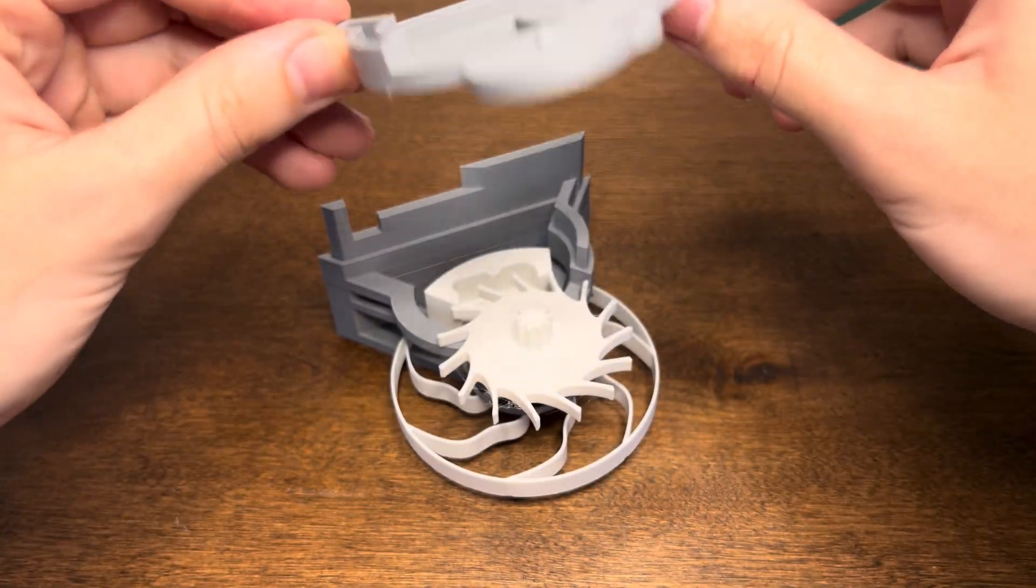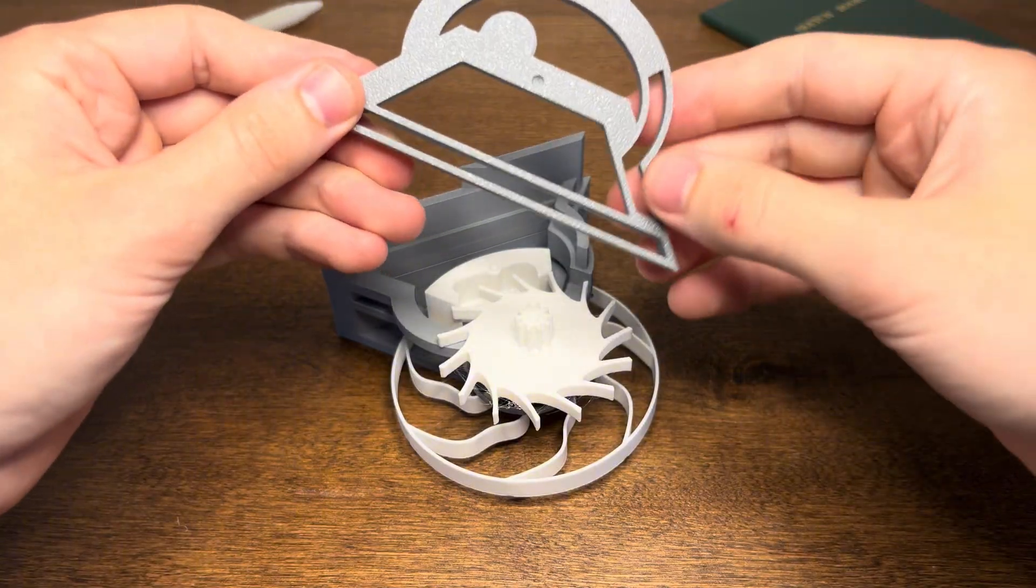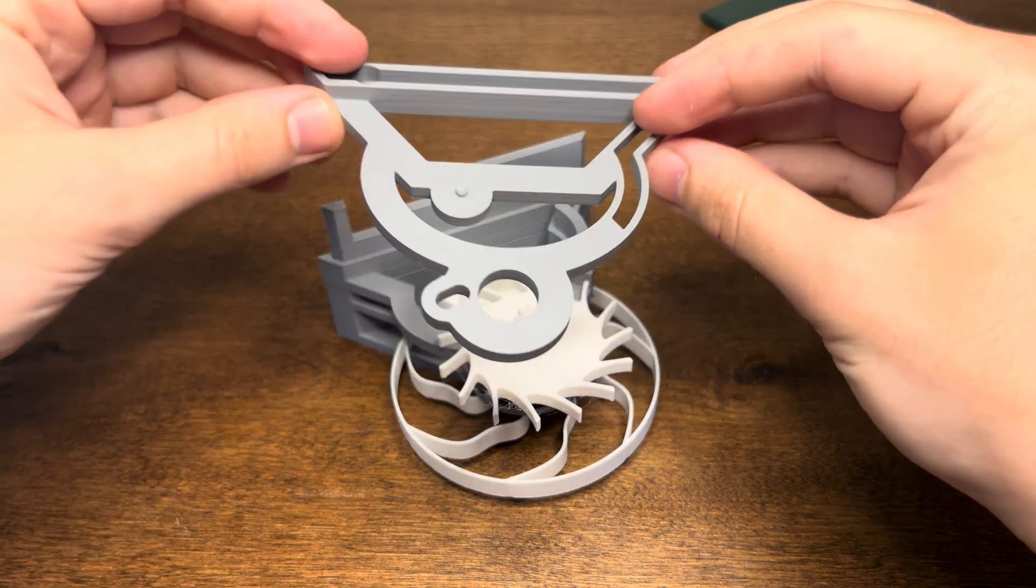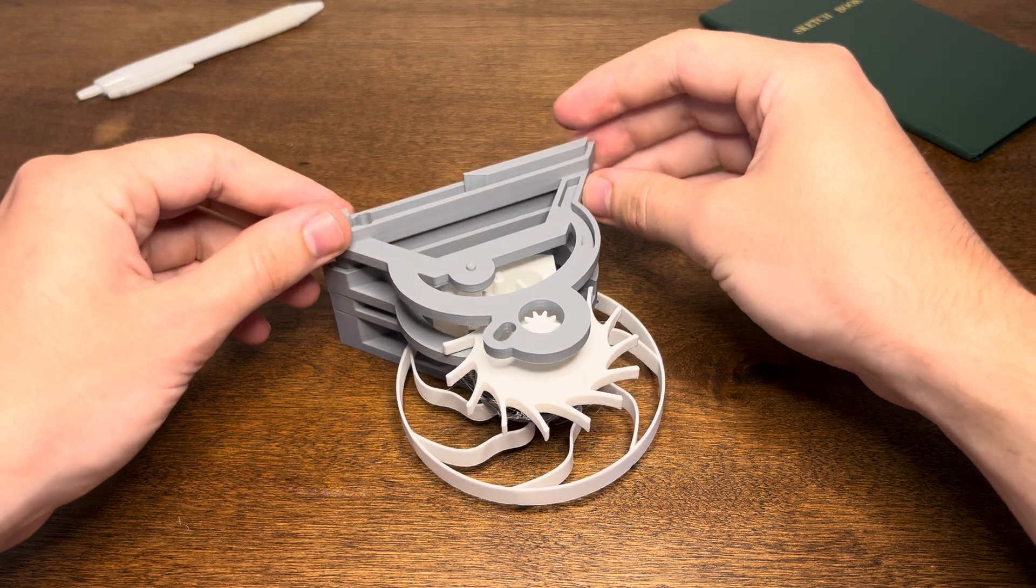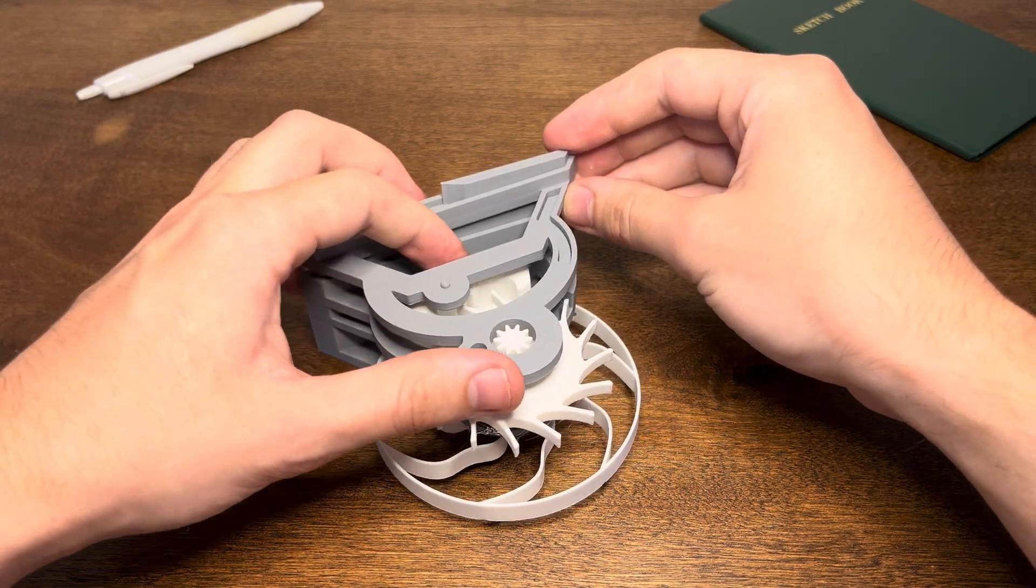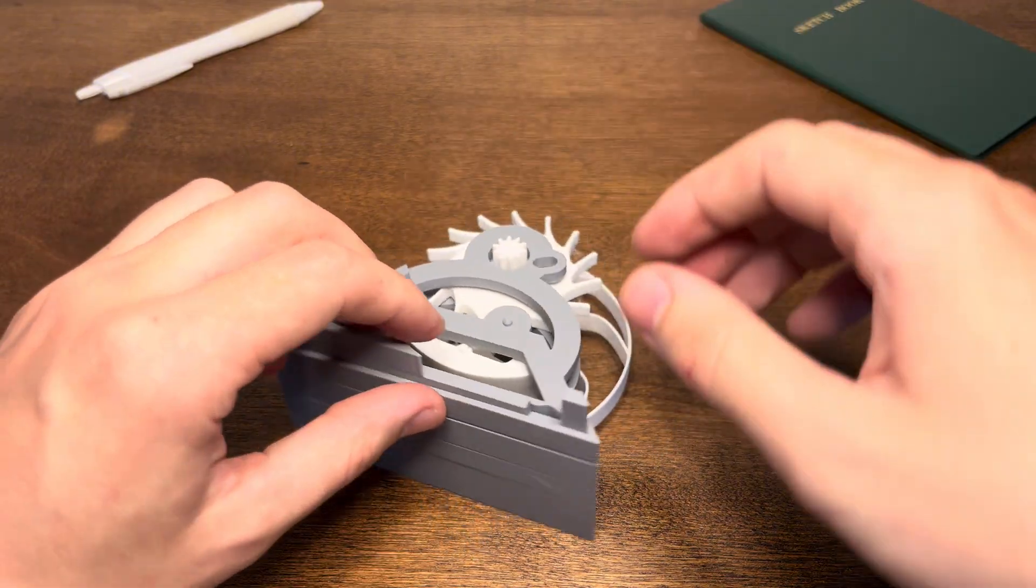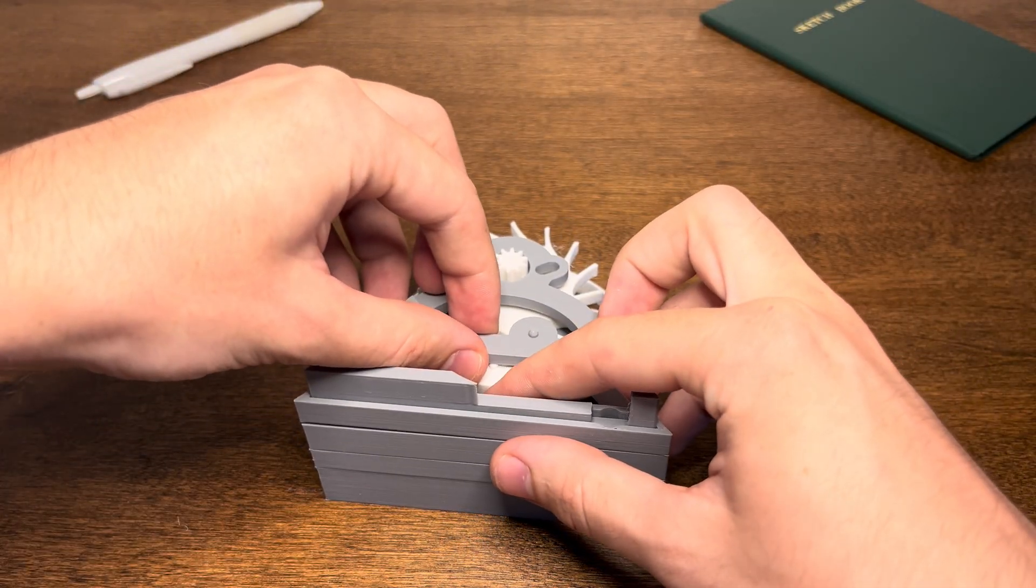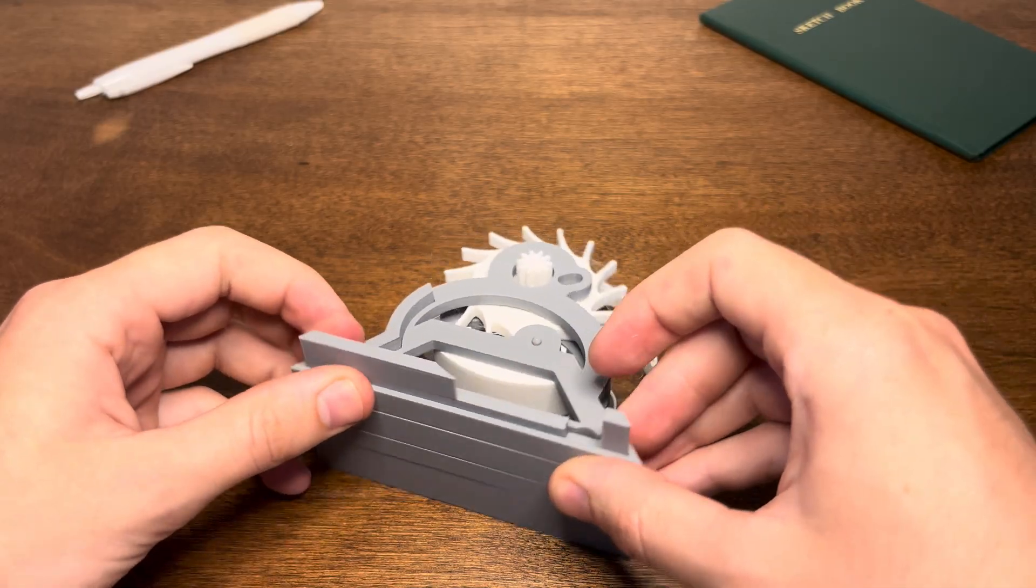And next up another housing piece. You can see it's the one with the hole in the top. And it interfaces with the pallet fork and the escapement wheel. Just make sure that you're slotting in that escapement wheel and the pallet fork into the right hole. You can see the pallet fork kind of needs a little bit of convincing. But just give it a wiggle and it should be good.